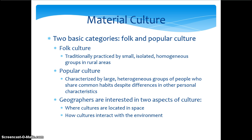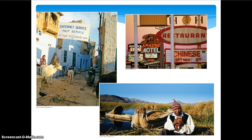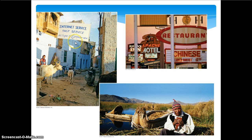We're talking about where culture is located and how cultures impact the environment — those are the two big things we want to look at in this unit. Here are some examples: you have folk culture, popular culture, and then a combination — a folk culture-looking village, a small rural area, but with internet service, giving you that blend where folk and popular culture come together in similar places.